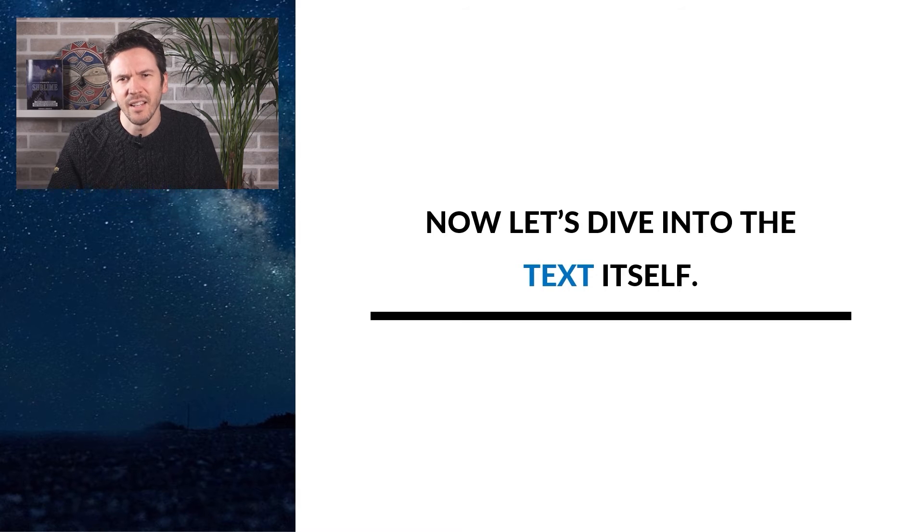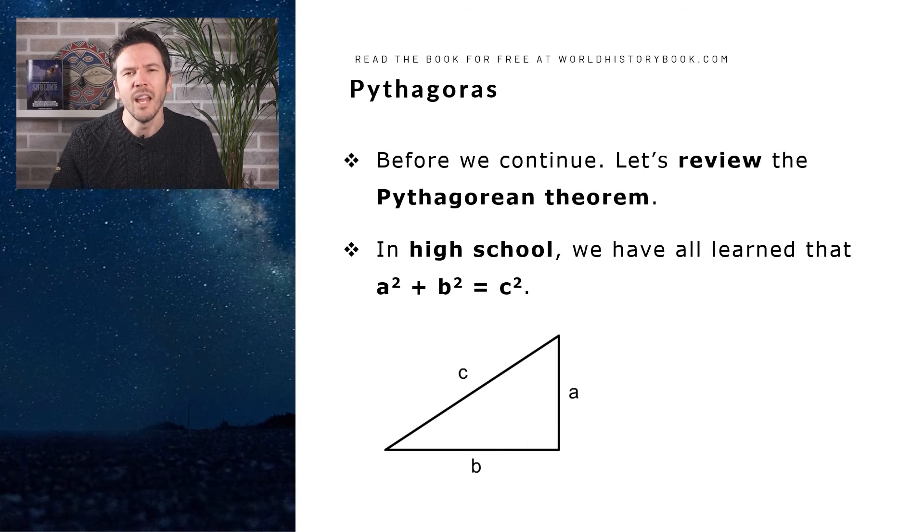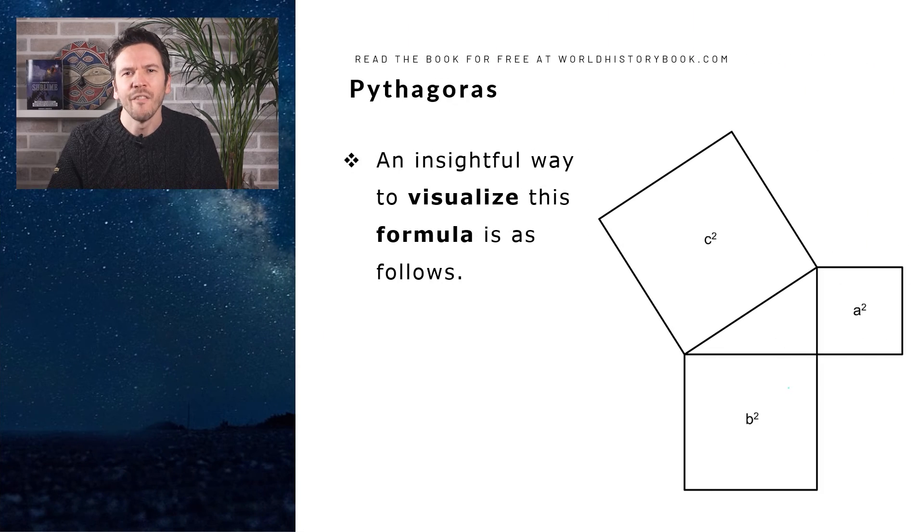Now let's dive into the text itself. While figuring out how to build altars of different size and shapes, Bodhayana stumbled on the Pythagorean theorem. As it turns out, the Pythagorean rule had been in use both in Egypt and Mesopotamia since at least 1800 BC. But Bodhayana is the first to explicitly formulate the general theory in words, although he did not give a proof of the theory. That had to wait until Pythagoras. Now, before we continue, let's review the Pythagorean theorem. In high school, we all learned that a squared plus b squared is c squared. If we have a right-angled triangle, and we name a and b the legs of the triangle and c the hypotenuse, then these sides are related via that equation.